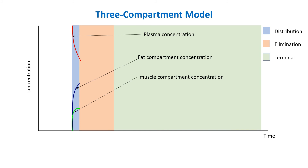Lean muscle, which has little fat, is not a significant storage reservoir for the drug, so it reaches its peak concentration quickly. The fat compartment, however, absorbs a large amount of drug, acting as a significant storage site. Once the distribution phase concludes, the drug enters the elimination phase, during which the drug is cleared from the blood and muscle compartment. But the fat tissue continues to store a significant amount of the drug.